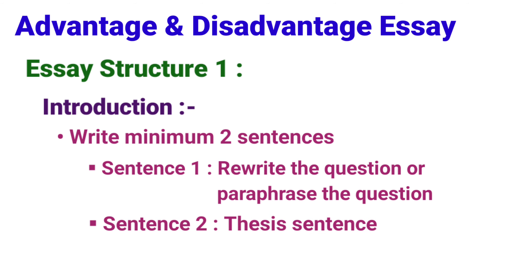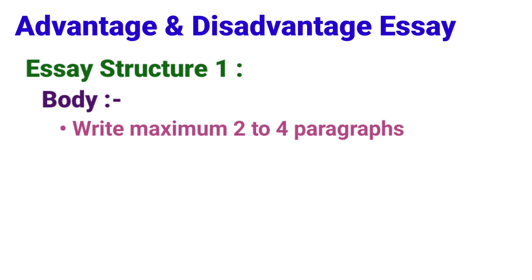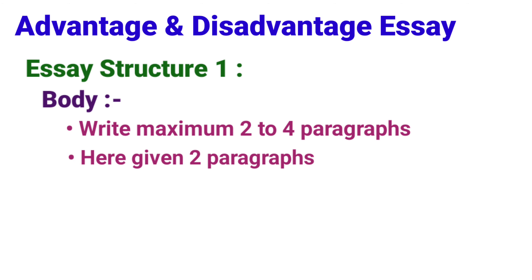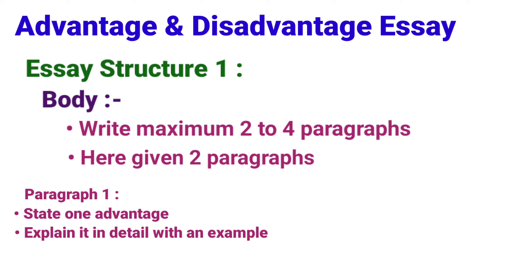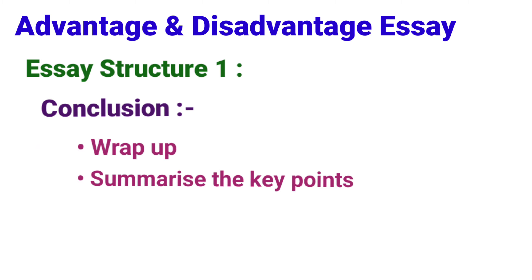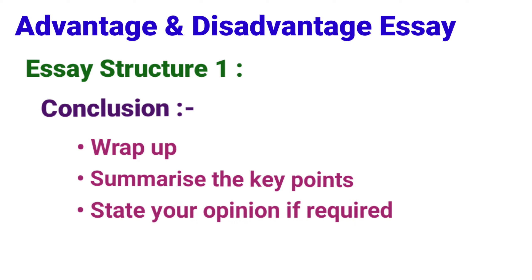The second sentence is the thesis sentence. In the body, write a maximum of two to four paragraphs. In Paragraph 1, state one advantage and explain it in detail with an example. In Paragraph 2, state one disadvantage and explain it in detail with an example. Finally, the conclusion is a wrap-up — summarize the key points and state your opinion if required.